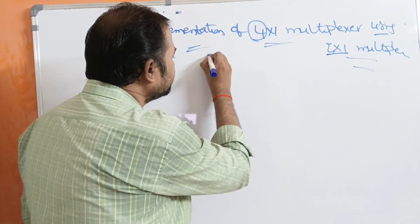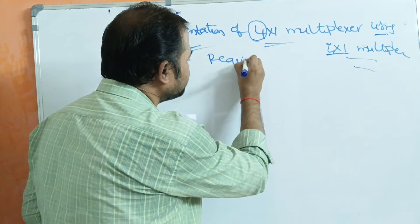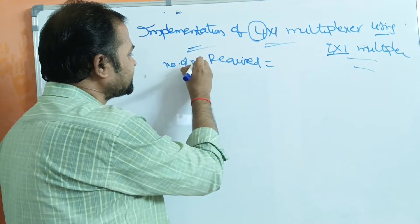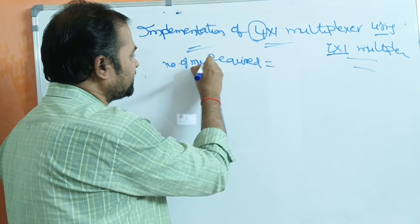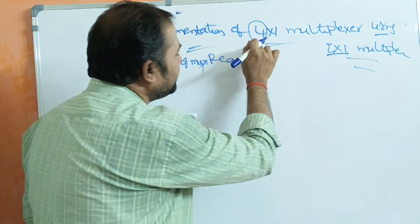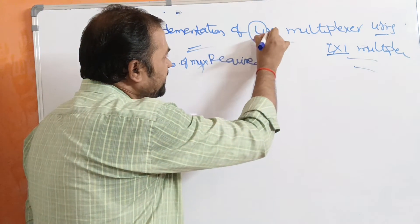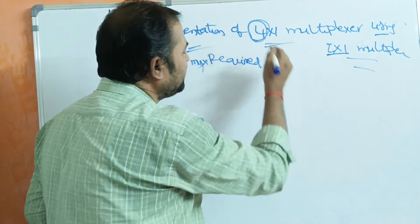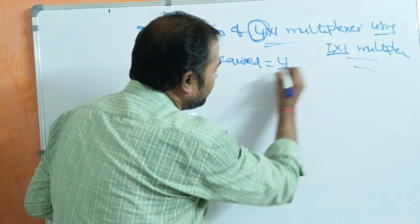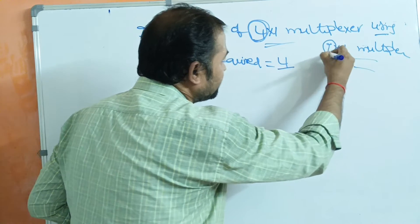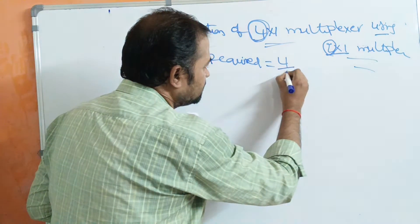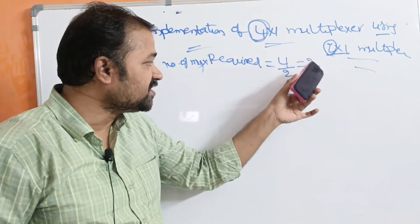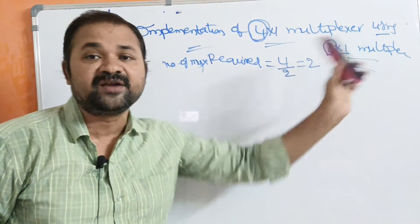In order to determine the required number of multiplexers, we divide the required multiplexer's number of data inputs by the available multiplexer's number of data inputs. The required multiplexer has 4 inputs, so 4 divided by 2 equals 2. At the first level, we require 2 two-by-1 multiplexers.